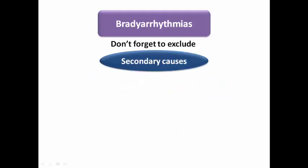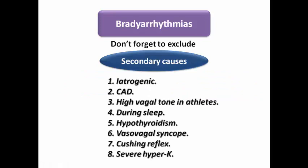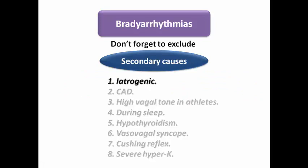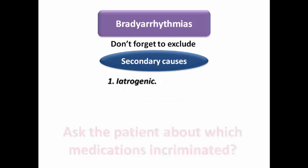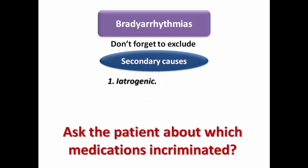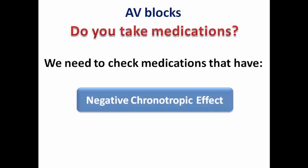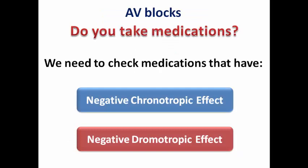There is a list of secondary causes which may cause bradyarrhythmia, but the most famous one we usually ask about is the iatrogenic cause. That's why we ask the patient about any medication which may be incriminated — we need to check medications with negative chronotropic or negative dromotropic effects, as these may be reversible causes rather than implanting a permanent pacemaker without need.